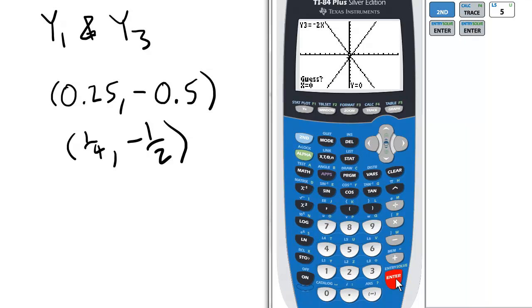The point of intersection appears to be slightly right of the origin, so pressing Enter again furnishes us with the answer 0.25, negative 0.5.